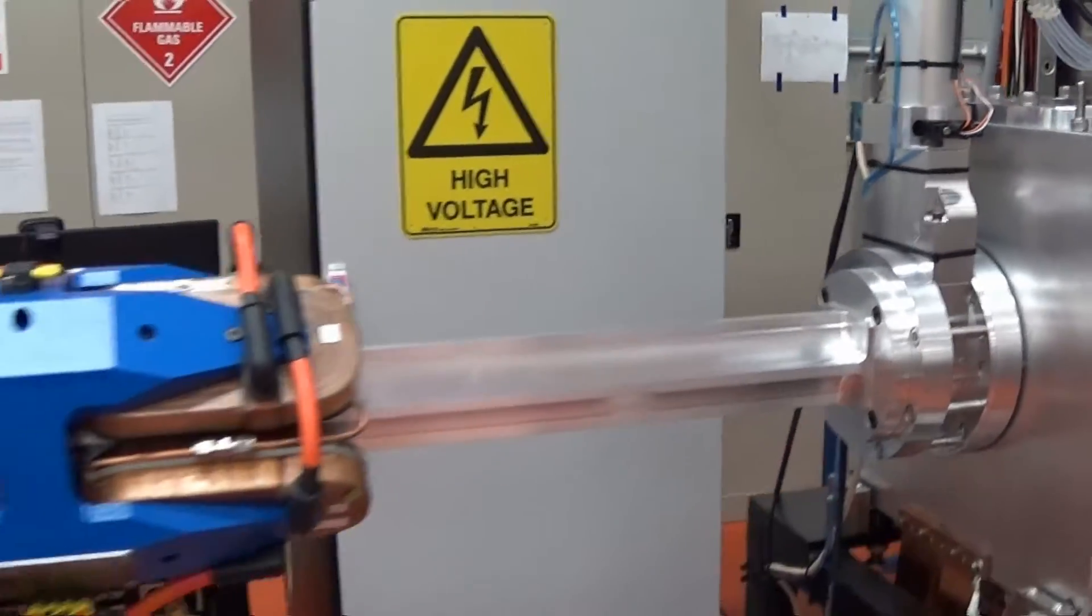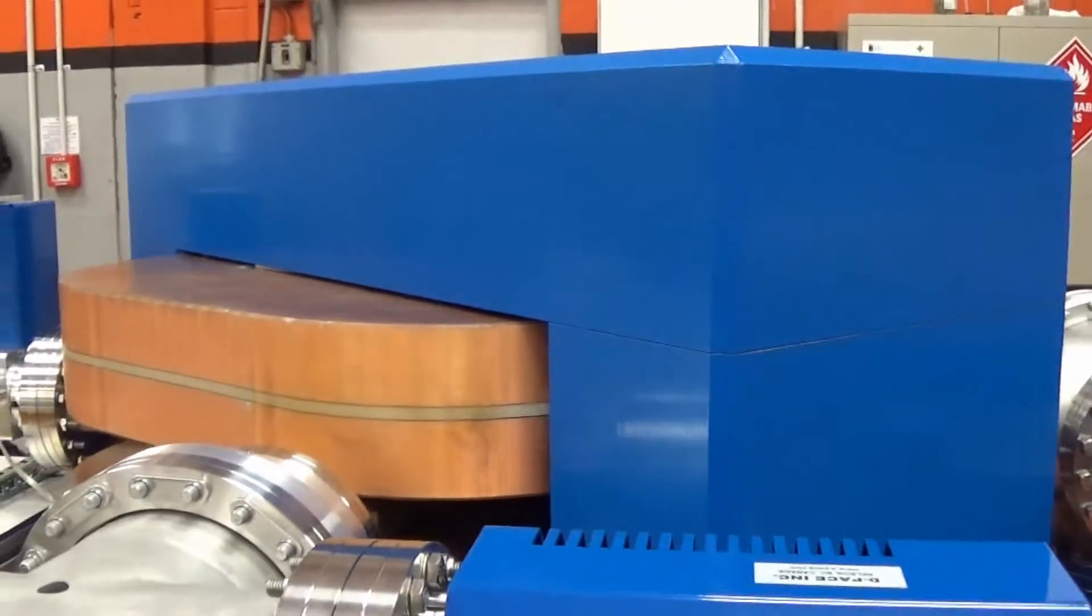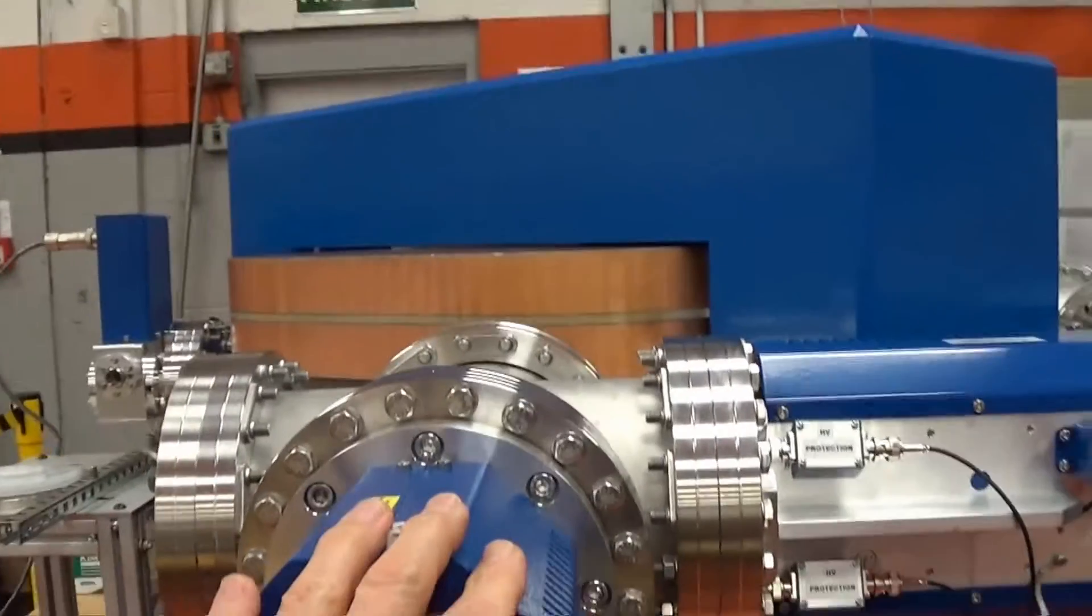What we've done now in this second phase is put this beam line in here and this big magnet which bends the beam at right angles so it comes out to the Faraday cup here.